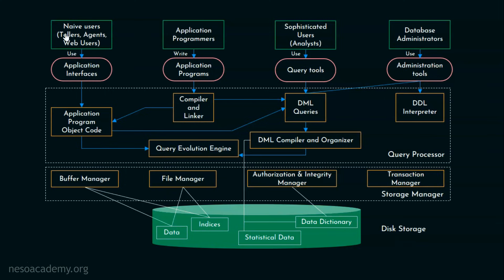If you see the diagram, we can see the users are at the top level: the naive users, the application programmers, the sophisticated users, and the database administrators. Each user will be preferring some set of tools for their activities, and here is the tool level. We have two important components: the query processor part and the storage manager part. Also, the databases are actually stored in the disk — this storage is referred to as the disk storage. In the database architecture part one and part two presentations, we are going to exclusively focus on all the individual components that constitute this database system architecture — the components in the query processor as well as the storage manager.